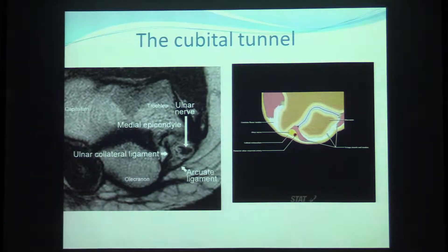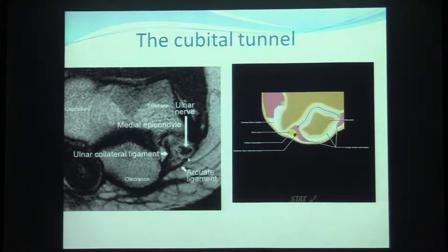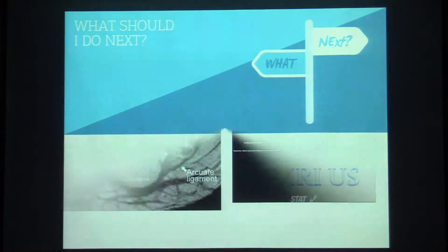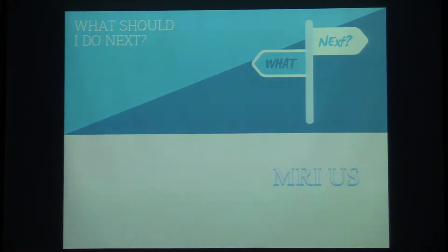A little bit of anatomy. We have the medial epicondyle, we have the olecranon, we have the arcuate ligament, and we have the ulnar nerve depicted here. We also have the posterior ulnar recurrent artery nearby the ulnar nerve. So we know the clinical history for this patient with the olecranon — what should we do next?